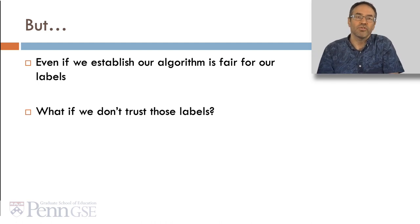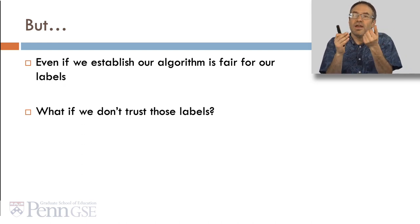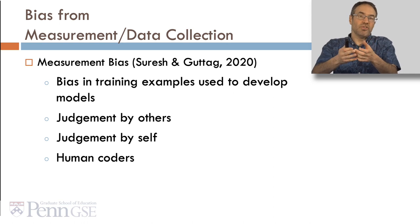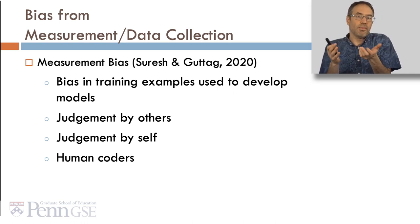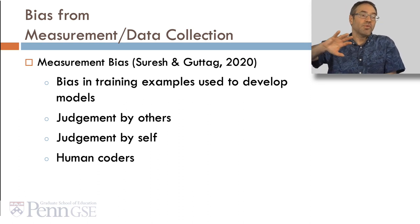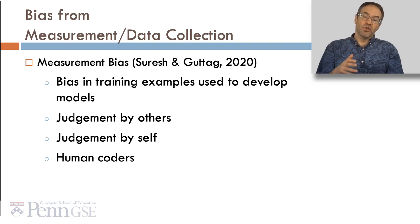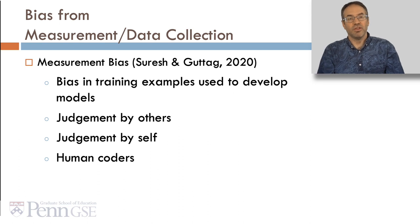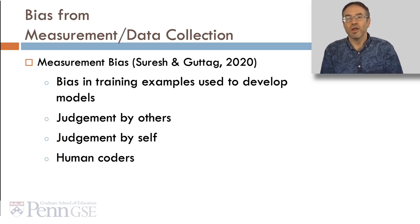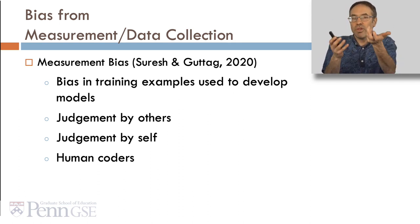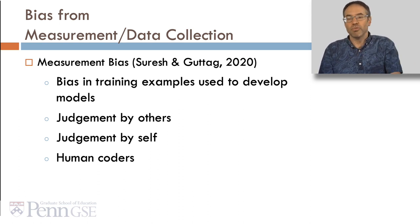But metrics alone don't tell us the full story, because even if we establish that our algorithm is fair for the labels we have, what if we don't trust those labels? This comes down to measurement bias, which occurs when there are biases in the training examples used to develop the models. For example, judgment by other people might involve biases — your coders might use their unconscious biases when making labels. Really any time human beings are responsible for a decision, you have some risk of bias. This includes so-called natural variables: for example, you might build a model to predict suspension from school, but suspension is itself governed by biases in the decisions of who gets suspended.